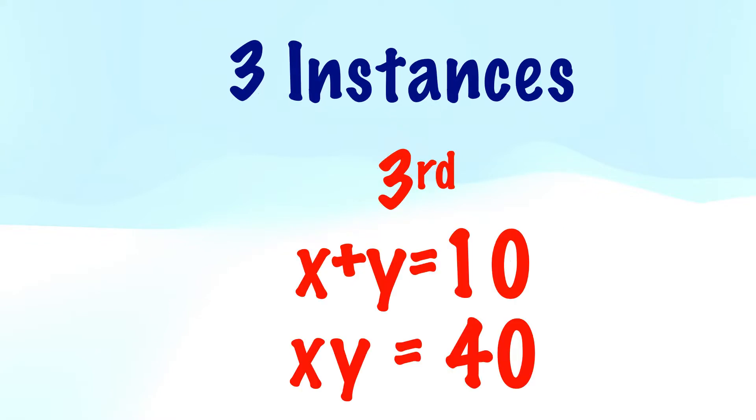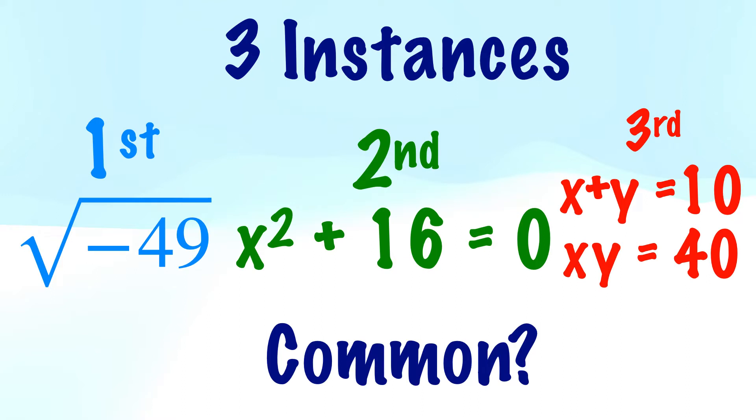Third, if someone says to you divide 10 into two parts, one of which multiplied into the other shall produce 40. In all these three cases, what is the common aspect that you can think of?